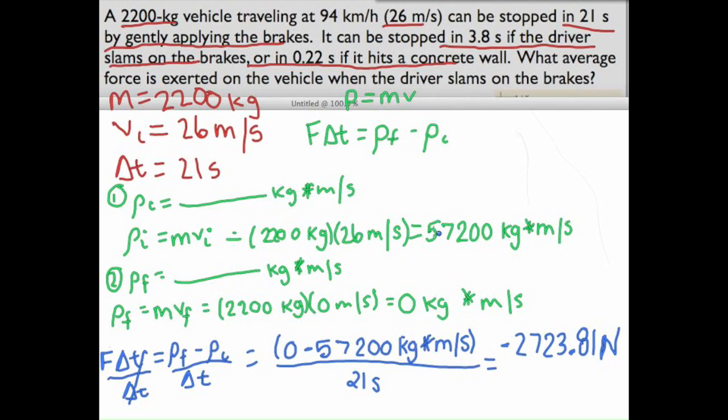So a couple of things you'll want to keep on your paper because we'll use them later. This is 57,200 and this is zero, and of course, your mass. So let's go to the next.